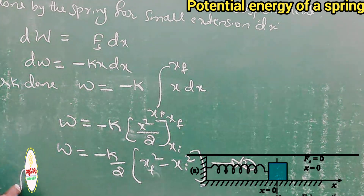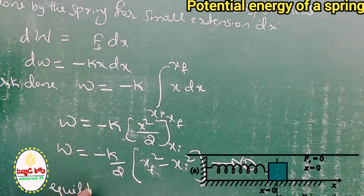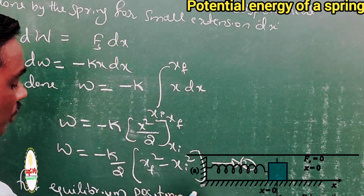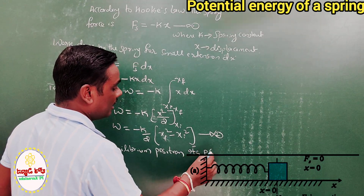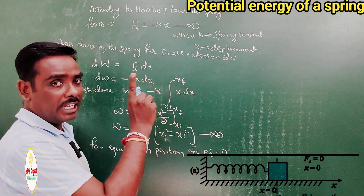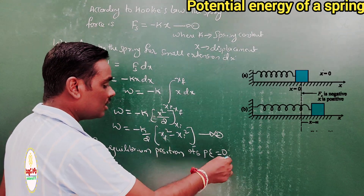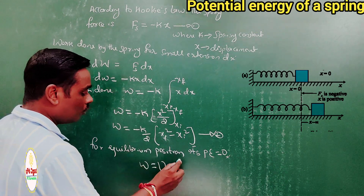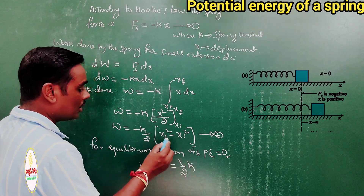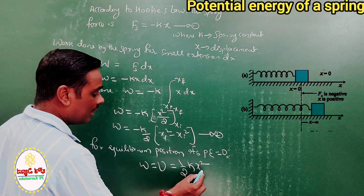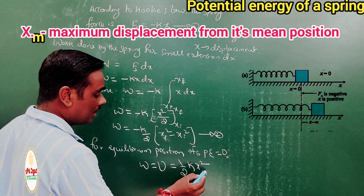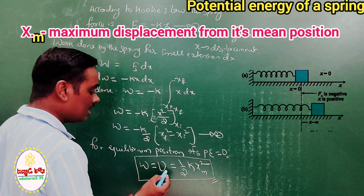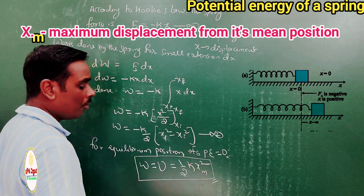Considering the equilibrium position, the potential energy is zero. When the block is at equilibrium, the energy stored is zero. Therefore, the energy stored equals the work done: W = (1/2)Kx², where x (or x_max) is the maximum displacement of the spring. This is the energy stored, and this is the amount of work required to extend or compress the spring.